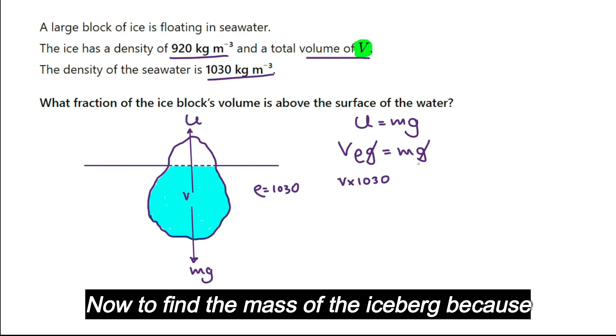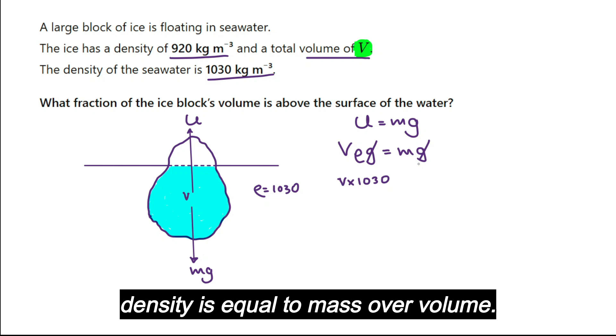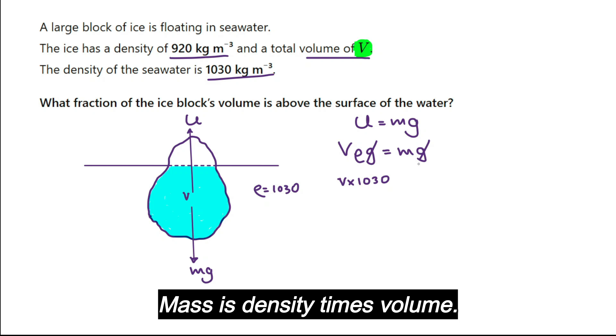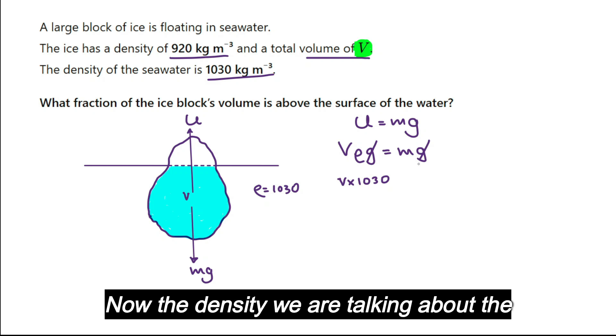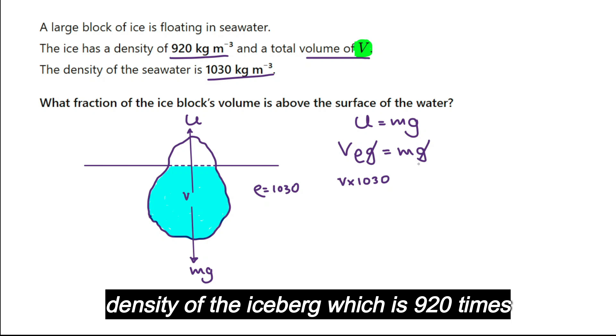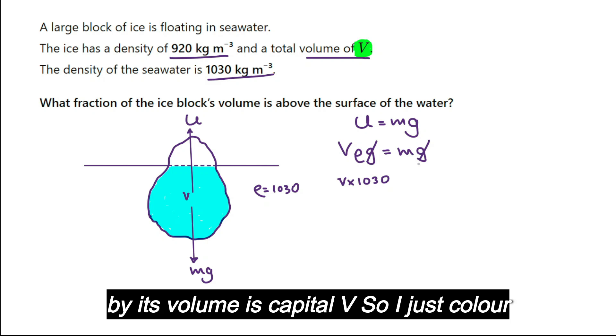Now to find the mass of the iceberg, because density equals mass over volume, mass is density times volume. The density we're talking about is the density of the iceberg, which is 920 times by its volume, capital V.